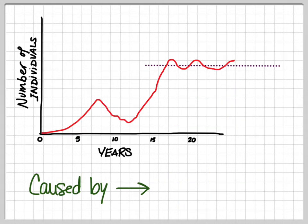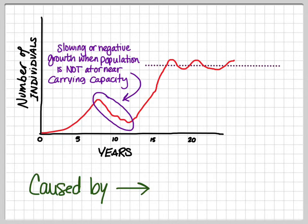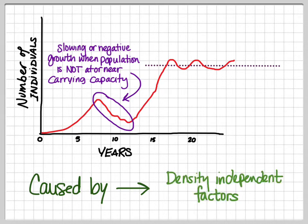This one looks a little bit different. Again, we have a population that starts from a zero size in a new place, and they're growing exponentially for a little while, but then we see a big drop-off. The carrying capacity line is clearly marked. This die-off, this reduction in the size of the population, happens long before carrying capacity is reached. When we have slowing or negative growth in a population that is not at or near their carrying capacity, we know that that is probably caused by a density independent factor. This could be a virus, it could be a natural disaster, we don't know. But this obviously isn't related to resource shortages because they're still well below carrying capacity.